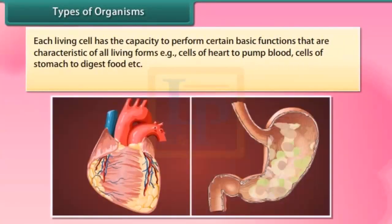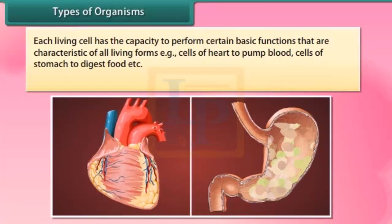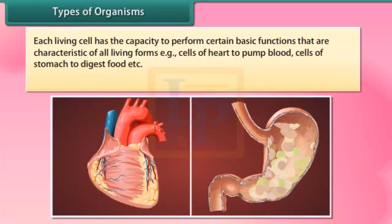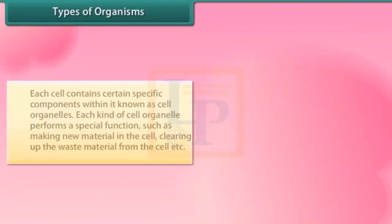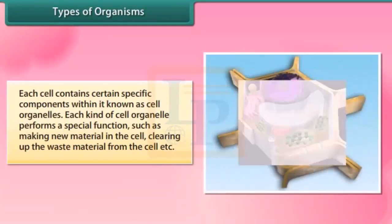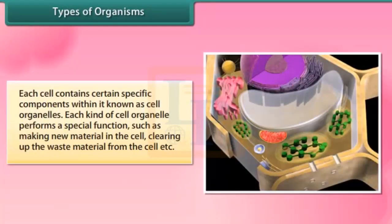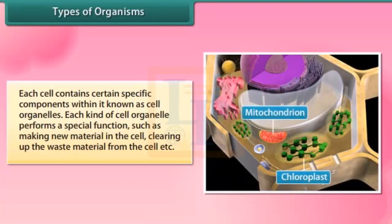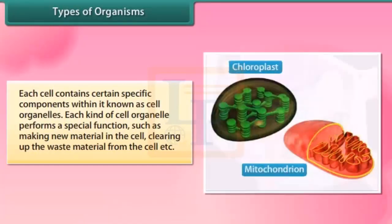Each living cell has the capacity to perform certain basic functions that are characteristic of all living forms — for example, cells of the heart to pump blood, and cells of the stomach to digest food. Each cell contains certain specific components within it known as cell organelles. Each kind of cell organelle performs a special function, such as making new material in the cell or clearing up waste material from the cell.